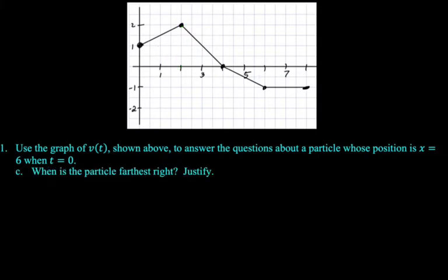All right, next up, when is the particle farthest to the right? Okay, and then we want to justify this. So I'm going to use a candidates test on this. So to use a candidates test, I need our function to be continuous, which it definitely is. I'm not going to justify that. I'm just going to say position is continuous. We know that position is continuous because the velocity is continuous, which means the position is differentiable, which means the position is continuous.